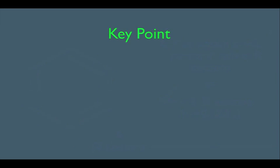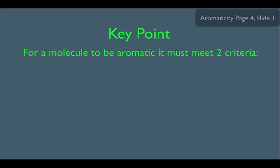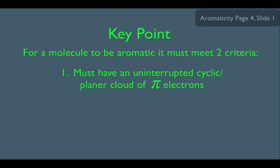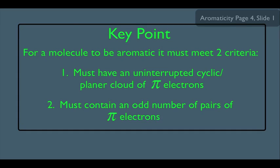So what are our key points? To determine if a molecule is aromatic, it must meet two criteria: number one, it must have an uninterrupted cyclic planar cloud of pi electrons, and two, it must contain an odd number of pairs of pi electrons, or equivalently, have 4n + 2 pi electrons. On an orgo exam, your professor may list a collection of molecules and ask which ones are aromatic. In other online lectures, we'll look at many sample problems to practice quickly applying these criteria.